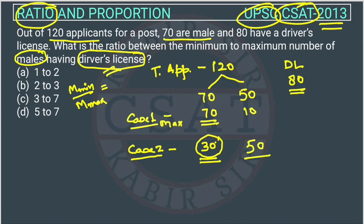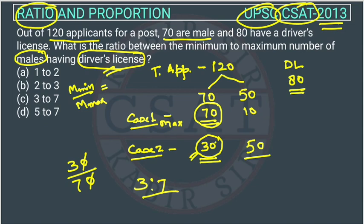So 30 is the minimum number of males having a driving license. The question is asking us to find minimum to maximum. Minimum is 30, and maximum is 70. So this 0 will cancel this 0, and the ratio is 3 is to 7. So option C is the answer.